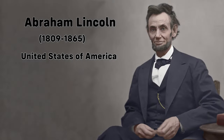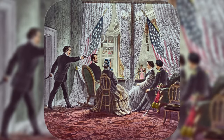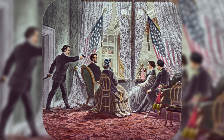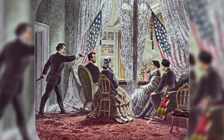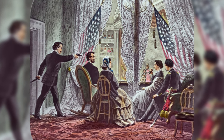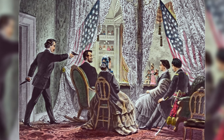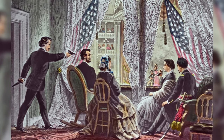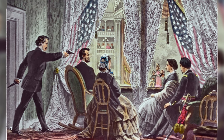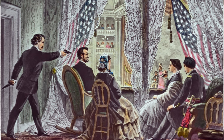Abraham Lincoln was the 16th President of the United States, serving from 1861 until his assassination in 1865. John Wilkes Booth, a Confederate sympathizer and actor, assassinated Lincoln on April 14, 1865 at Ford's Theater in Washington, D.C. Booth was angered by Lincoln's policies during the Civil War, including the opposition to slavery and his actions against the Confederacy.